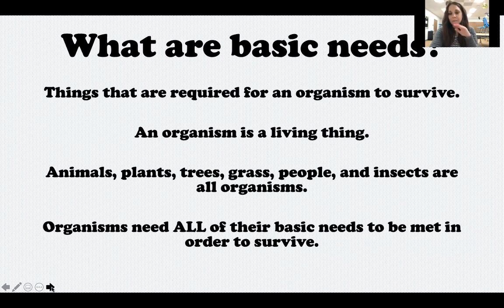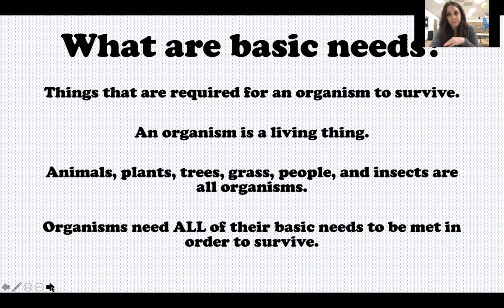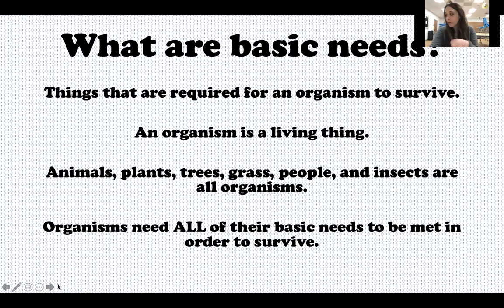Plants have five basic needs and animals have four. And if a plant only has four of their needs met and not all five, they cannot survive. Same with animals — if they only have one, two, or three of their needs met, they will not survive. They have to have all of their needs met.